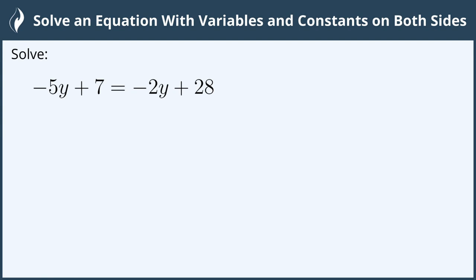So I'm going to choose to move the 2y over. To do that I need to do the opposite operation to negate this. Here it is a subtract or a negative 2y, the opposite will be to add 2y to both sides.